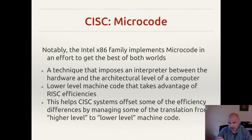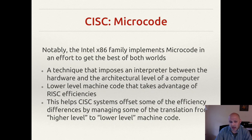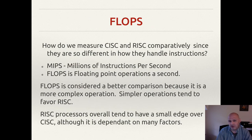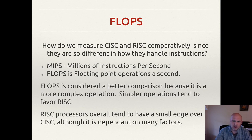Microcode is essentially flashed onto a kind of read-only memory on the board. It is possible to change microcode — IBM does this on System Z quite often — but it's not something you would do every day, and on most x86 machines it is probably never done at all. To compare and contrast CISC and RISC, one way is by measuring in FLOPS — floating point operations per second. Another way is MIPS — millions of instructions per second. Generally, floating point is considered a better comparison because it's a more complex operation; simpler operations tend to unfairly favor RISC and don't give as much of an apples-to-apples comparison.